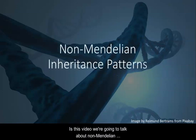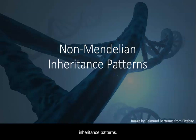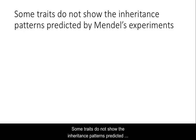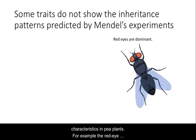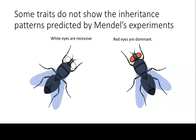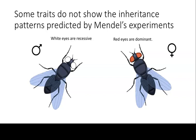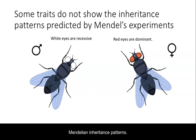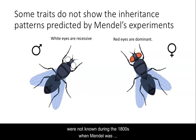In this video, we're going to talk about non-Mendelian inheritance patterns. Some traits do not show the inheritance patterns predicted by Mendel when he examined the inheritance of several characteristics in pea plants. For example, the red-eye phenotype in fruit flies is dominant over the recessive white-eyed phenotype, but white eyes only occur in males when the F1 generation of pure strains are crossed. All the females have red eyes, which isn't predicted by Mendelian inheritance patterns. There are certain pedigree patterns and inheritance ratios affected by principles not known during the 1800s when Mendel was conducting his experiments.